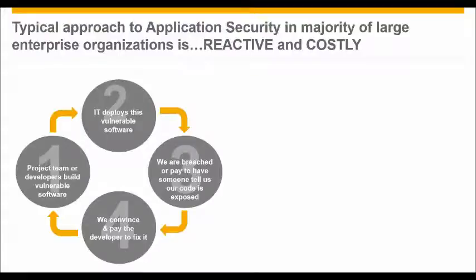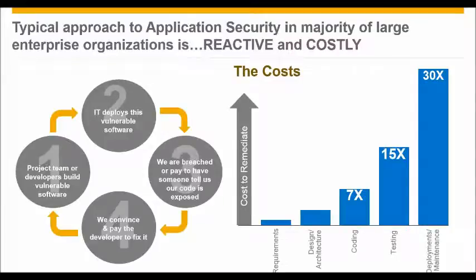The typical approach we see to application security is: build the software, deploy it, have a breach or a penetration test by an external organization, and then someone tells you the code is not secure. Discovering a security vulnerability after deployment costs 30 times more than finding it during the requirements or design phase, and even 23 times more than finding it during coding.